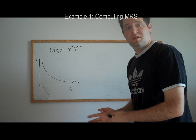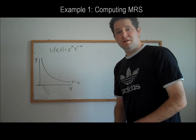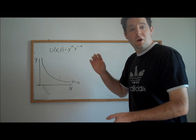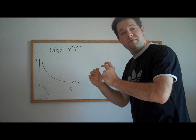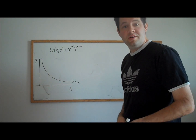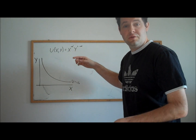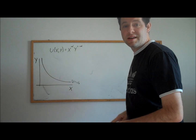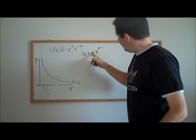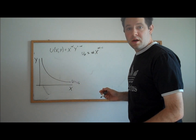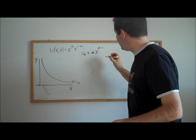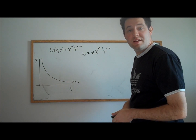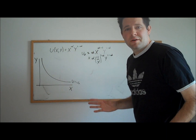Let's compute the marginal rate of substitution for this utility function. The marginal rate of substitution is the ratio of marginal utilities — marginal utility of x over marginal utility of y. The marginal utility of x is the derivative of the utility function with respect to x. We can use the power rule, treating y to the 1 minus alpha as a constant. That gives us alpha times x to the alpha minus 1, and then we bring the y part along. Taking the exponent to the negative power puts x in the denominator.